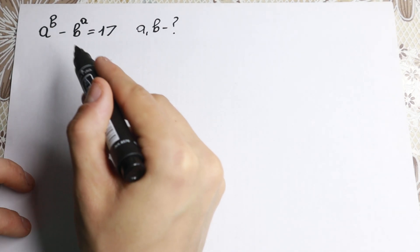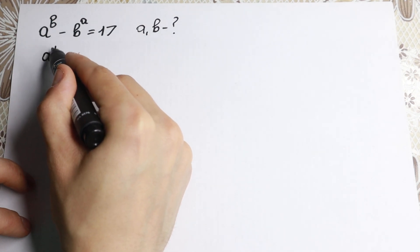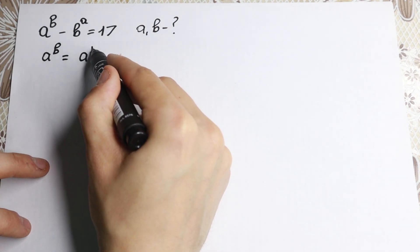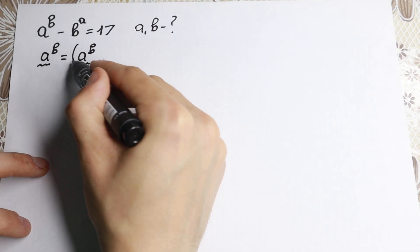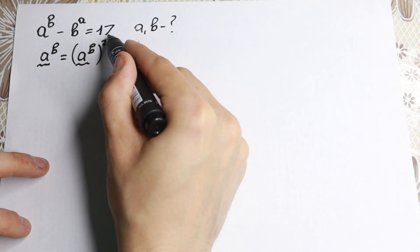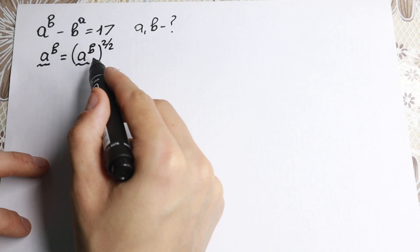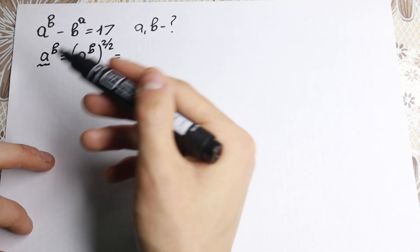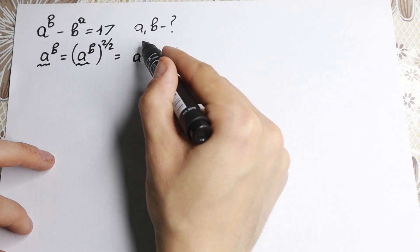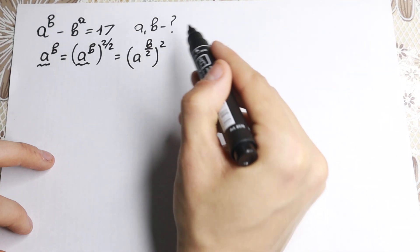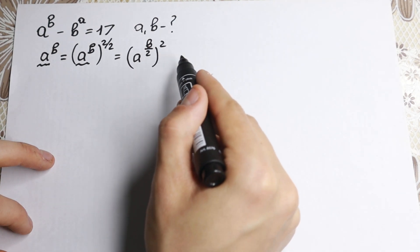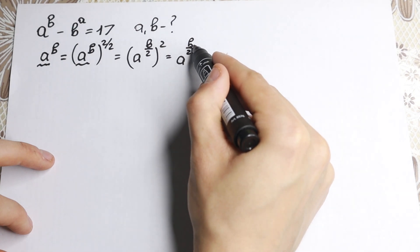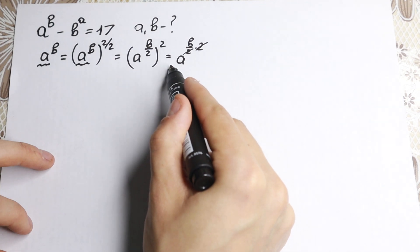We have a to the power b and b to the power a. Let's start with a to the power b. How can we rewrite it? We can raise it to the power 2 over 2, since 2 over 2 equals 1, so nothing changes. Using power rules, we can rewrite this as a to the power b over 2, raised to the power 2. We can verify this by multiplying: a to the power (b/2) times 2 cancels back to a to the power b.